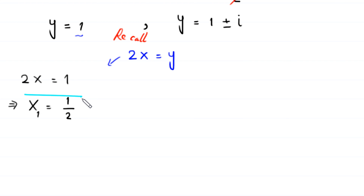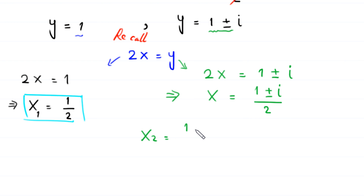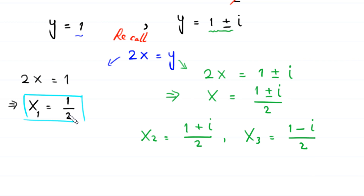When y = 1 ± i, we get 2x = 1 ± i, so dividing both sides by 2 gives x = (1 ± i)/2. Therefore the three solutions to the cubic equation are: x₁ = 1/2, x₂ = (1 + i)/2, and x₃ = (1 − i)/2.